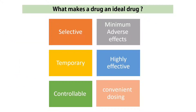Now let's move on to what makes a drug an ideal drug. There are six characteristics. The first one is selective — the drug has to work on one organ and only one organ. For example, if the drug is affecting the heart, it should not affect any other organ like the lungs. It should be only for the heart.